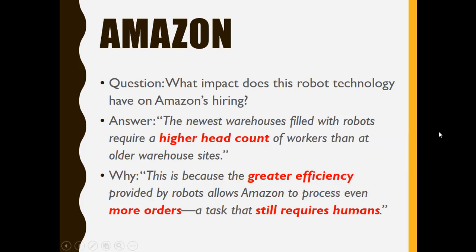Those are some examples — lots of examples of robots being used in lots of different ways. Now let's look at things robots don't do well, as well as things they do do well, and things they're basically improving at.